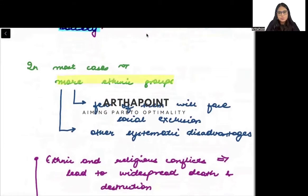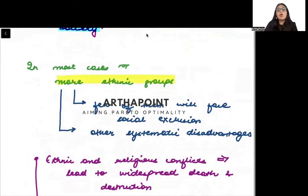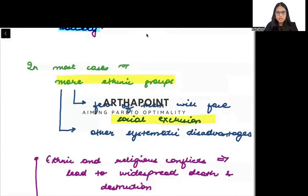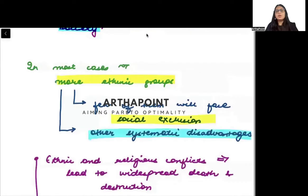When there are many different ethnic groups, a lot of them face social exclusion and inequality. Many people do not get what they should, and there will be many asymmetric disadvantages faced by various groups.